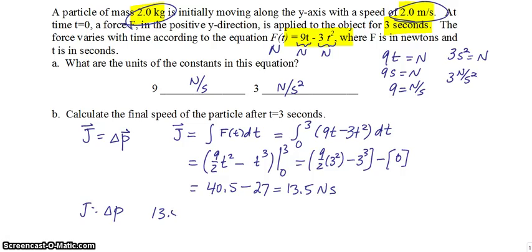13.5 newton seconds equals mass times velocity final minus mass times velocity initial. That's 2 kg times V_f minus 2 kg times V_i, which is 2 m/s. So that is 2V_f - 4.